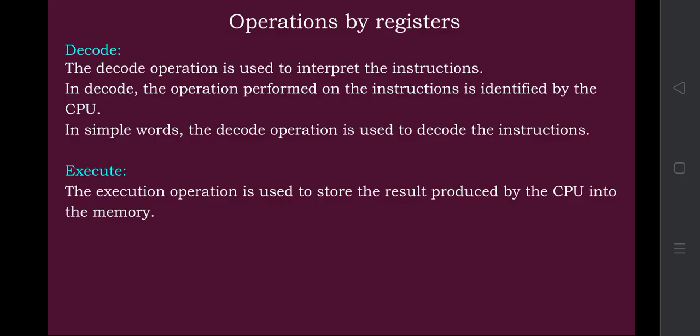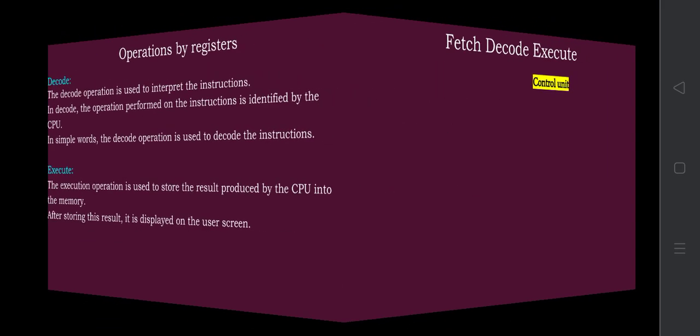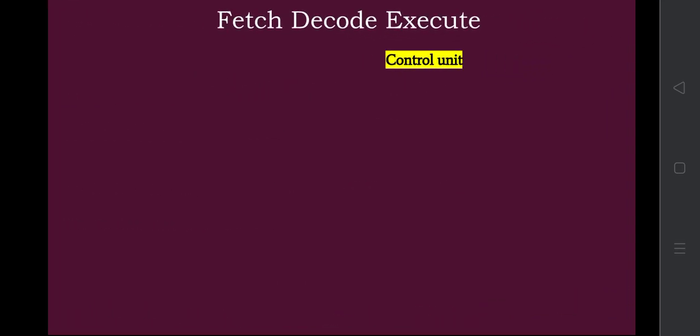The execute operation actually performs the operation. The data or instructions are brought by the fetch operation, translated into machine language by the decode operation, and finally the execution is performed. The execute operation stores the result produced by the CPU into the memory. After storing the result it is displayed on the screen, or the data may be stored in the register, as instructed by the user or programmer.